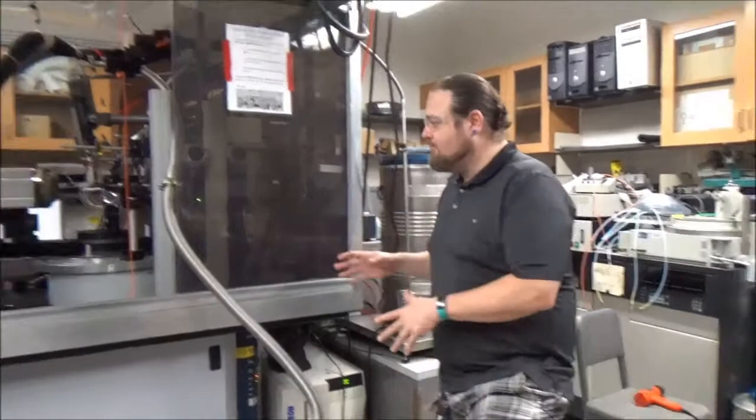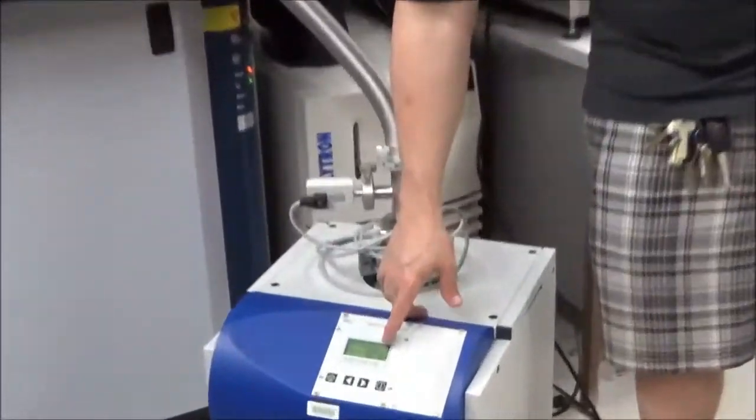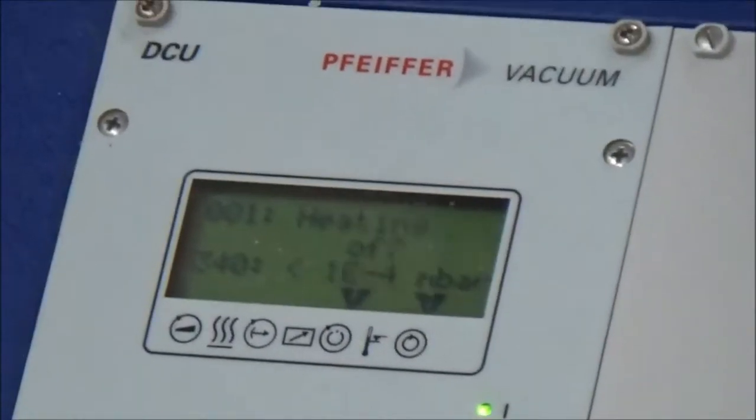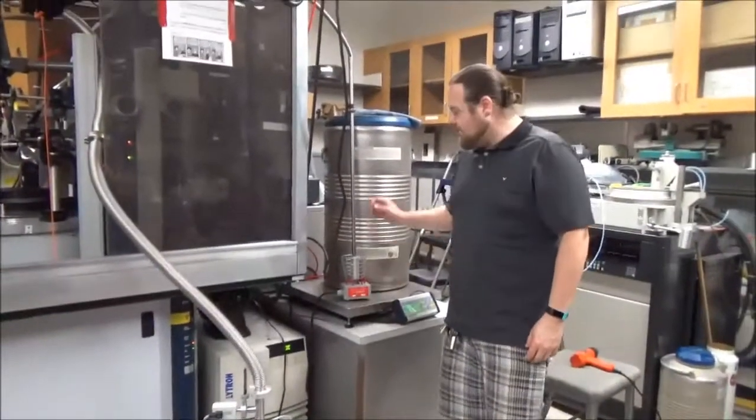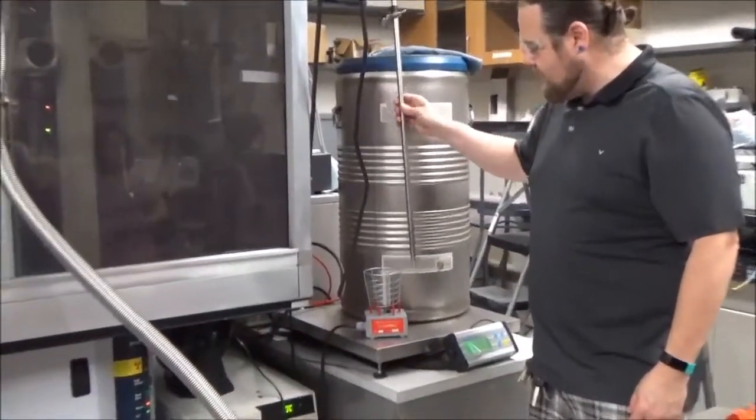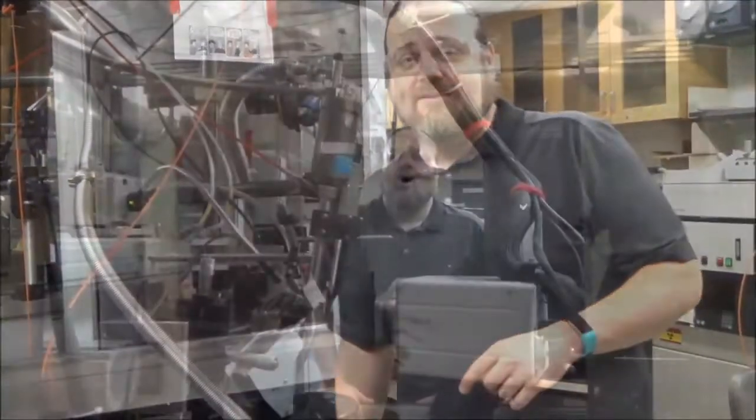Okay. So here we are about 24 hours later, everything's been pumped down. We can see on the turbo pump here that it's reading less than one times 10 to the minus four. So that's basically off the charts. What we're going to do now, we unplug the heater. We're going to remove the transfer line here and I'll show you what we have to do up on top in just a second.